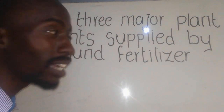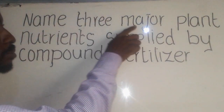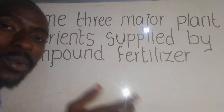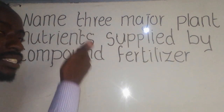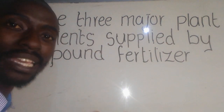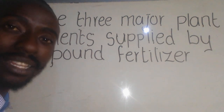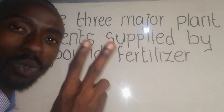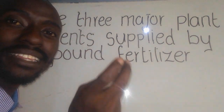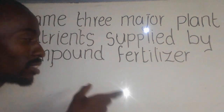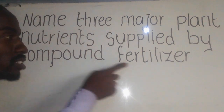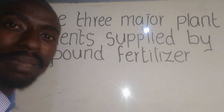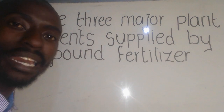The question for agriculture says: number three, major plant nutrients applied by compound fertilizer. When they say plant nutrients, we are simply talking about minerals or chemical elements which are required by the plant. These plant nutrients are divided into two: we have the macro and the micronutrients. But here, we are talking about compound fertilizer, which is a type of fertilizer made up of two or more chemical elements.